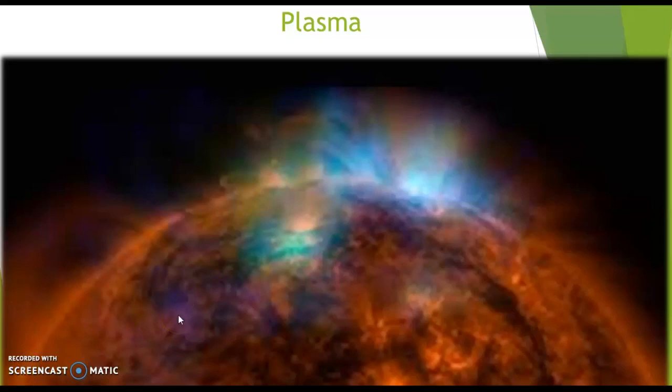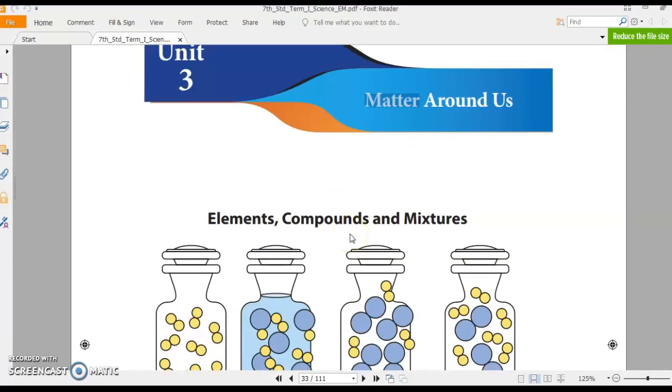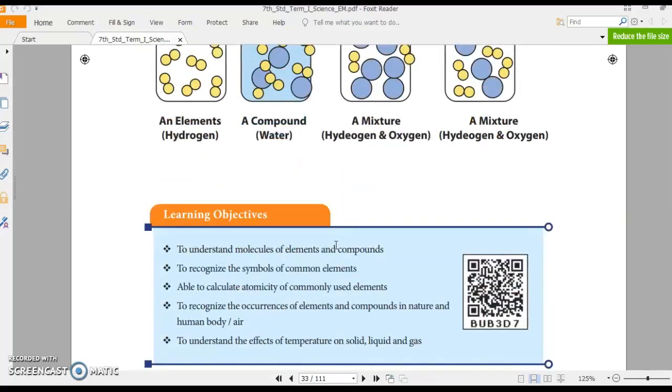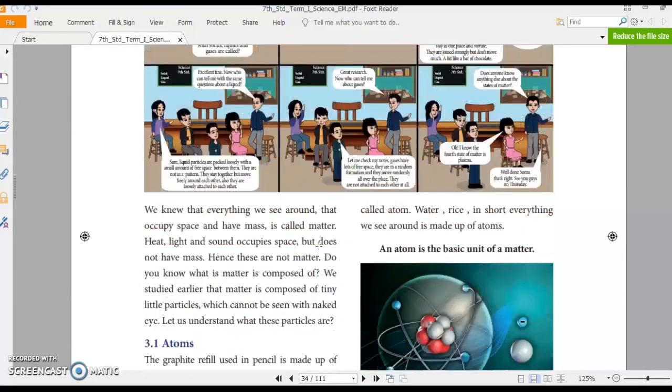Okay? I told you that anything and everything that occupies space is called matter. Suppose, if you can think of something which occupies space, which occupies only space as matter, it's absolutely wrong because a matter should have space and mass. So heat, light, and sound cannot be considered as matter. Even though it has space, it does not have mass in it.